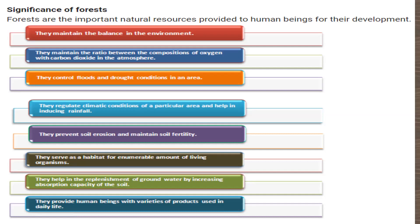Let's summarize the significance of forests. Forests maintain the balance in the environment and the ratio between oxygen and carbon dioxide in the atmosphere. Forests control flood and drought conditions in an area. They regulate the climatic conditions of a particular area and help in inducing rainfall. Forests prevent soil erosion and maintain soil fertility. They serve as a habitat for innumerable living organisms, help in the replenishment of groundwater by increasing the absorption capacity of the soil, and provide human beings with varieties of products used in daily life.